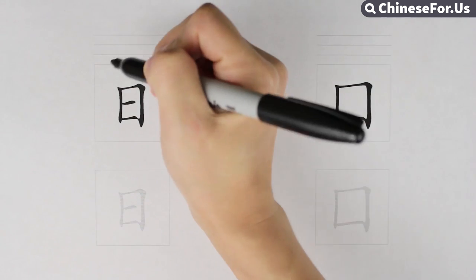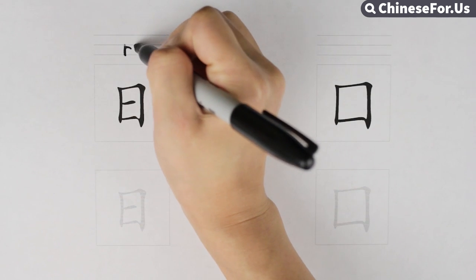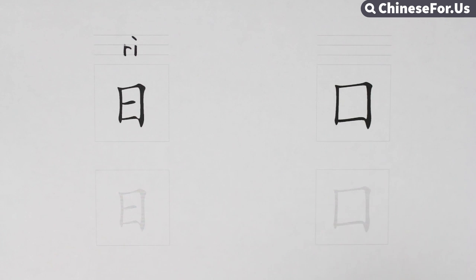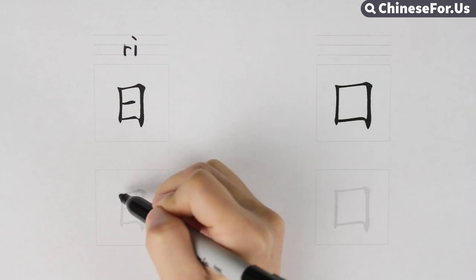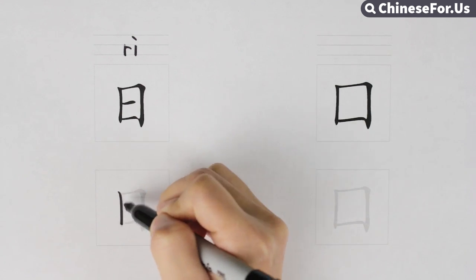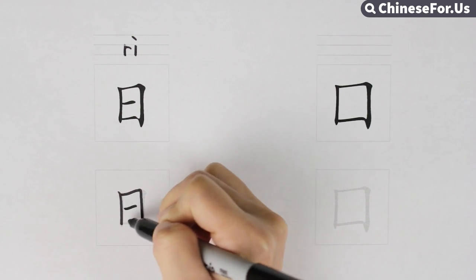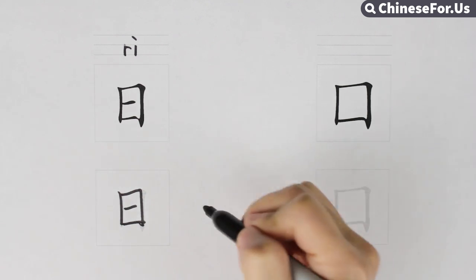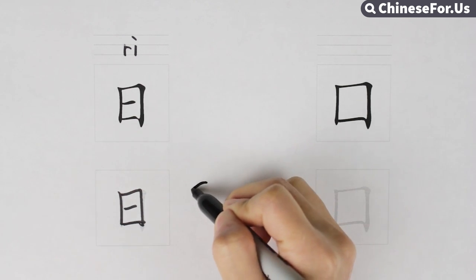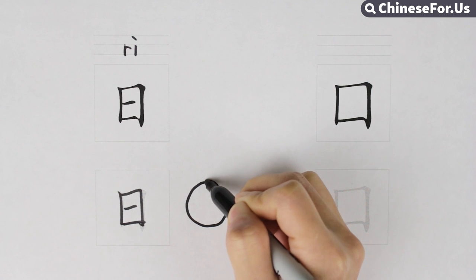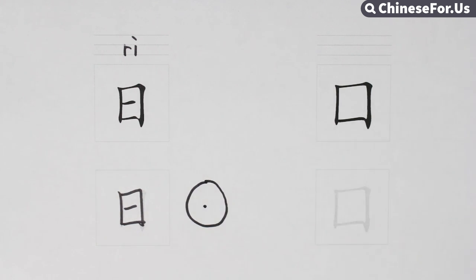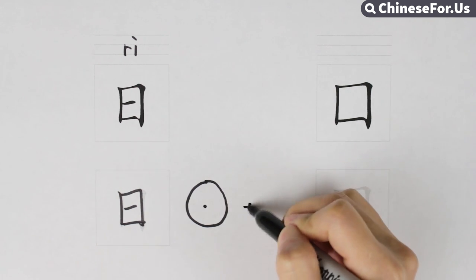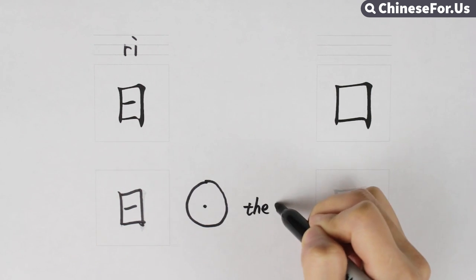The first radical is 日. It means the sun. In ancient times, it was written like this — it just looked like the sun.